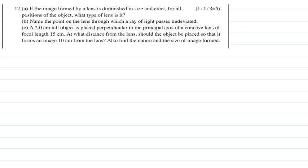The question says that if the image formed by a lens is diminished in size and erect for all positions of the object, what type of lens is it?